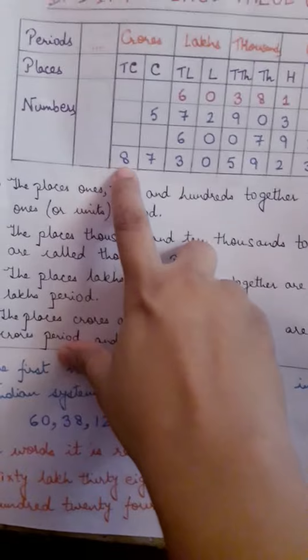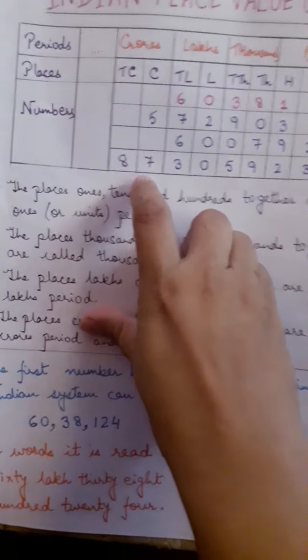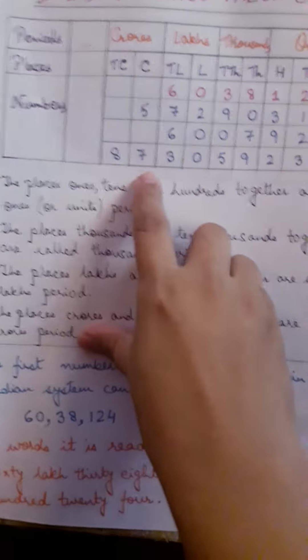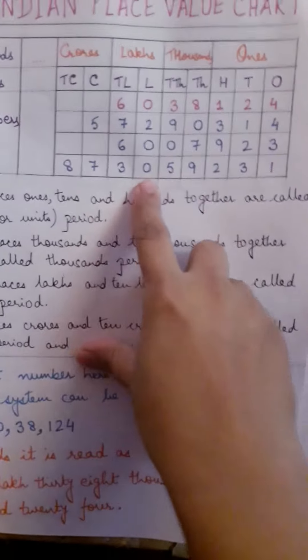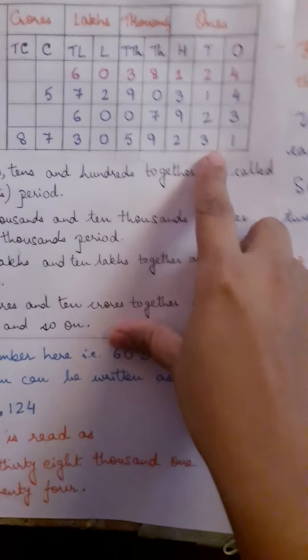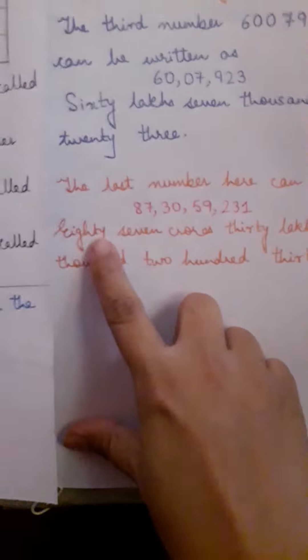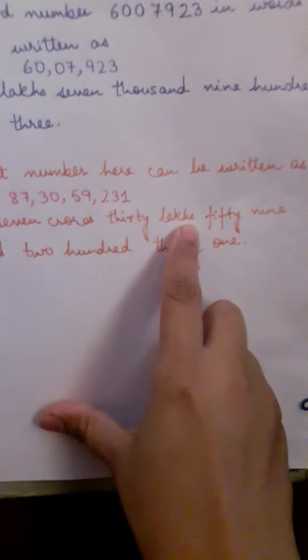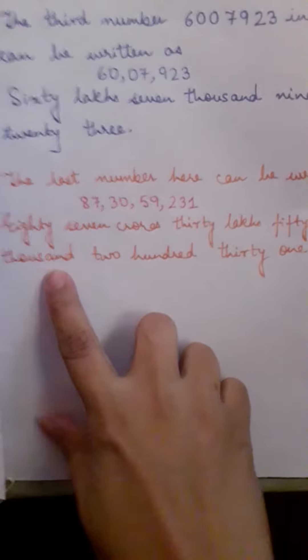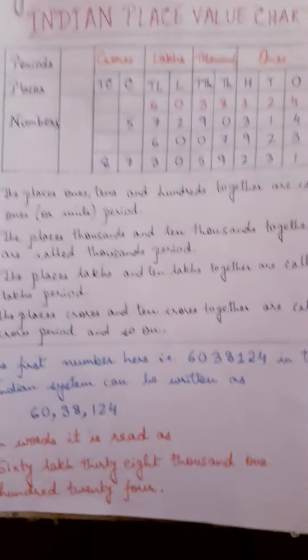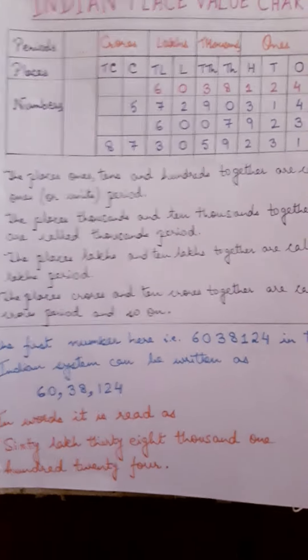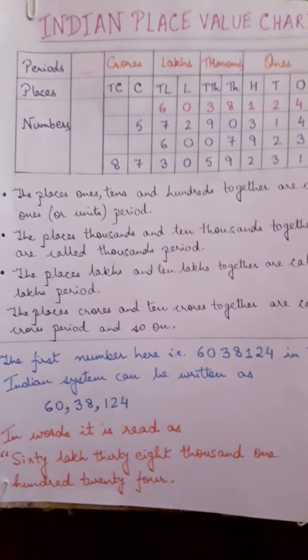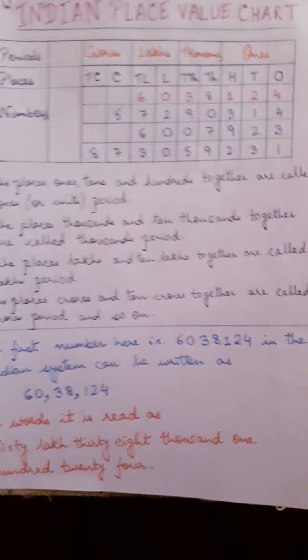One more example: 8 comes under ten crore and 7 comes under crore, so 87 crore 30 lakh 59,231. In this way we write numbers using the Indian system of numeration. I hope you have understood this video — thank you.